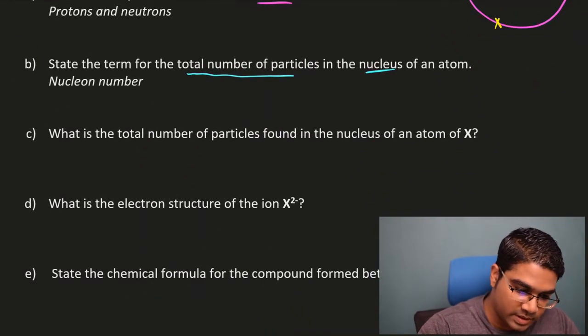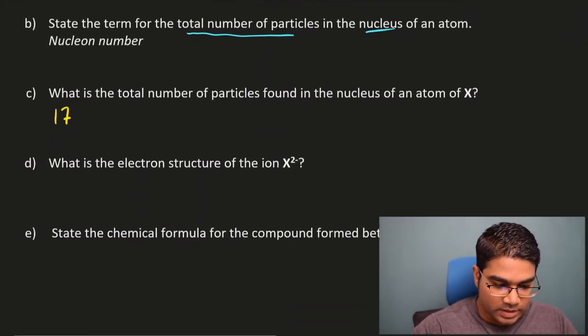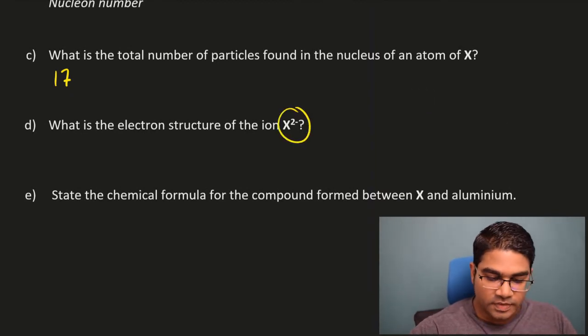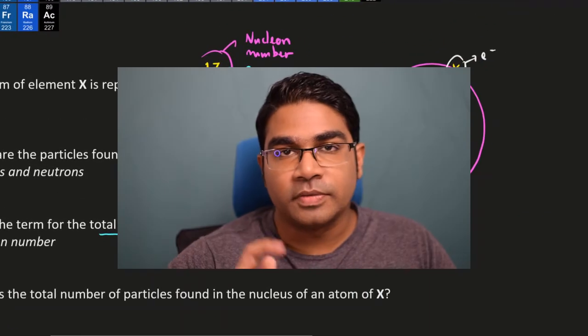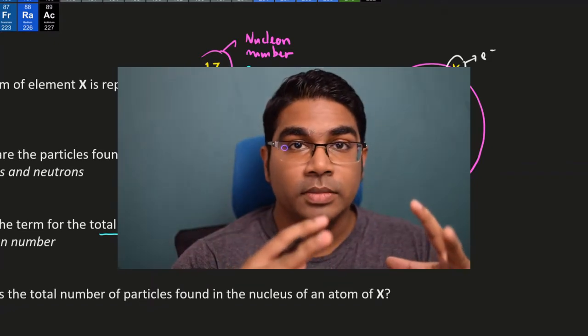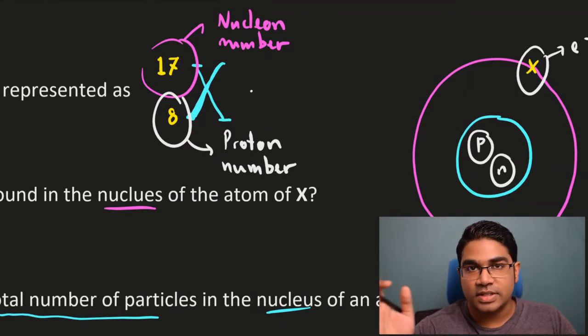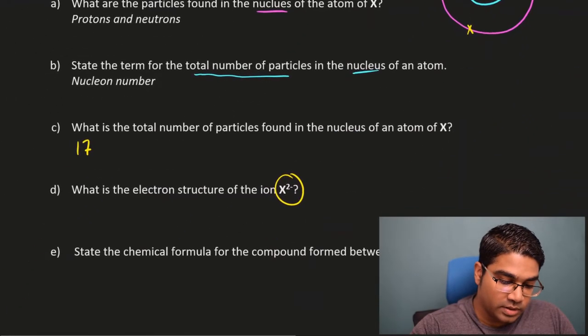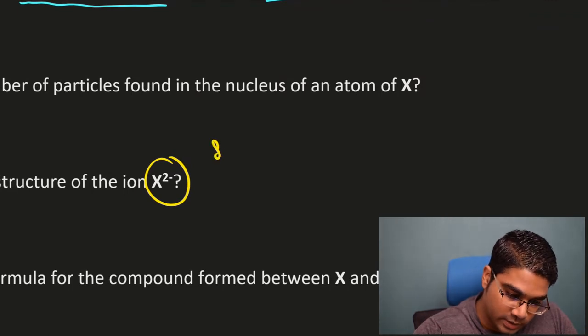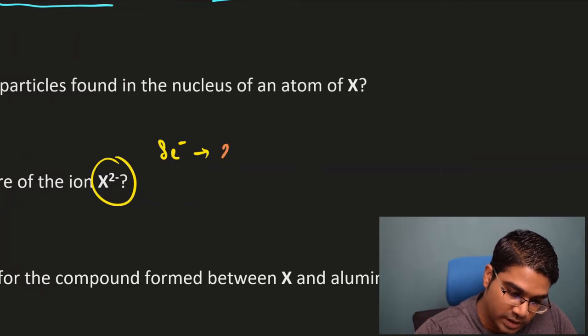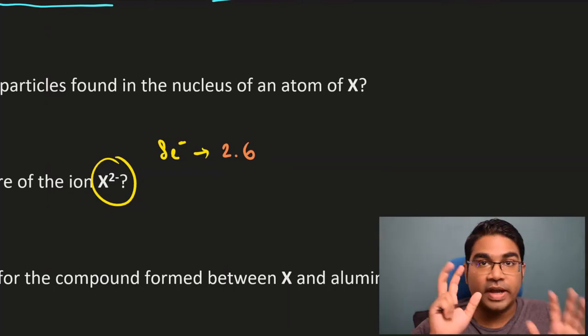What is the electron structure of the ion X²⁻? First, let's look at the electron structure of neutral X. For a neutral atom, the number of protons equals the number of electrons. The proton number is 8, so it has 8 electrons. For 8 electrons, the electron arrangement would be 2 in the first shell and 6 in the second shell — written as 2,6.